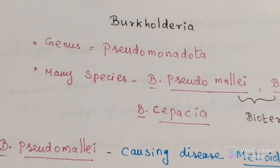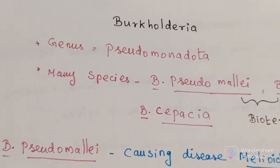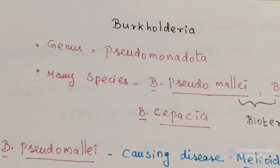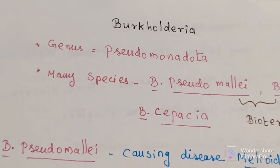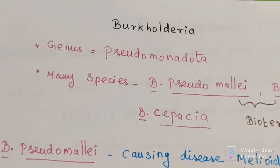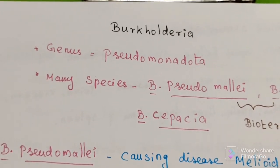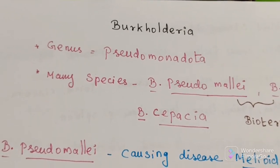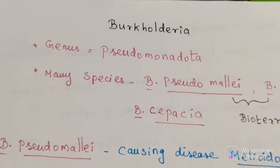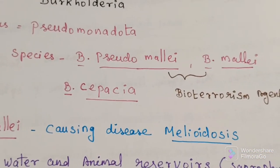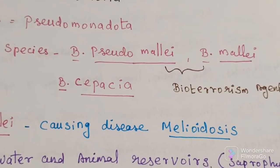The topic of discussion is Burkholderia. Burkholderia is a genus of Pseudomonadota. It has many species, of which three are important.